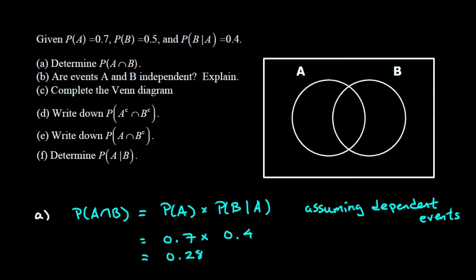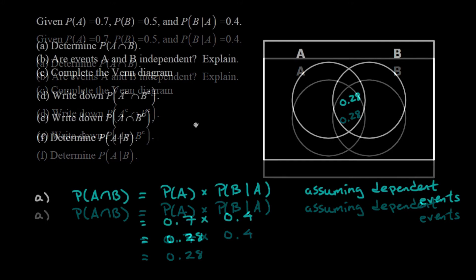In our Venn diagram, we could think of these as percentages, but since we're working with probabilities we'll just put the probability in decimal form. Putting the decimal in there tells you we're listing probabilities in the Venn diagram. So the probability of A and B occurring is 28 percent or decimal 0.28.